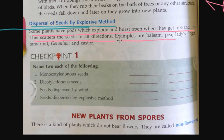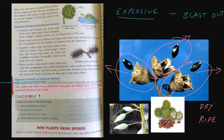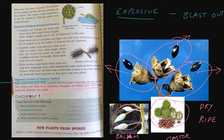Examples of seeds dispersed by the explosive method are balsam, peas, lady's fingers, tamarind, geranium, and castor. Balsam and castor seeds are visible here. These are the seeds which disperse with the help of explosion.